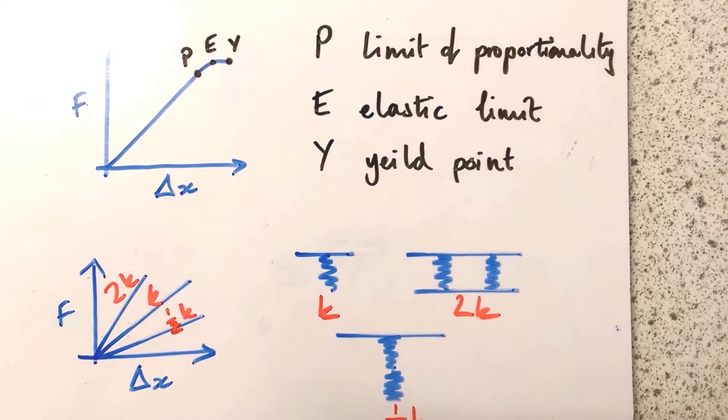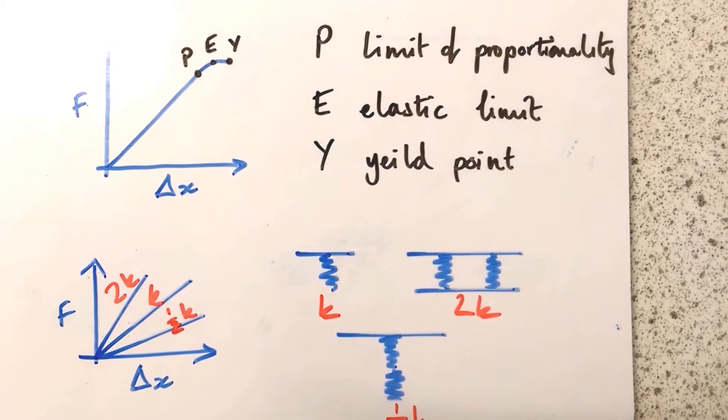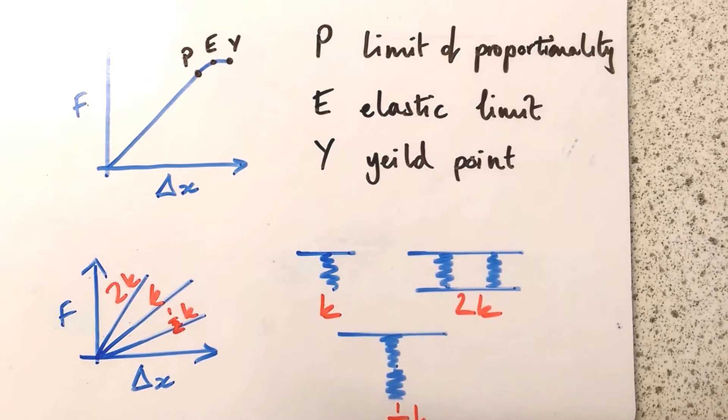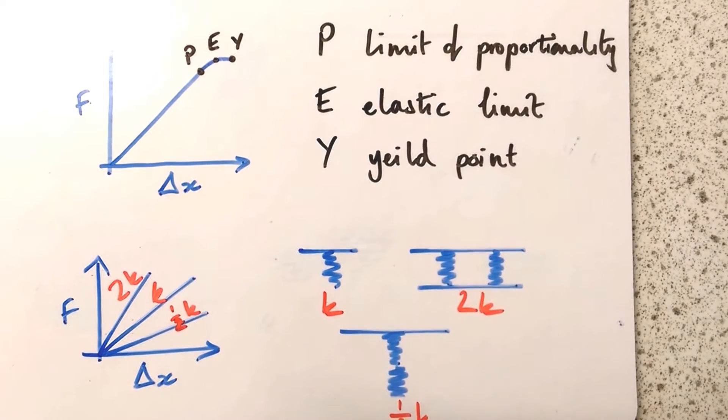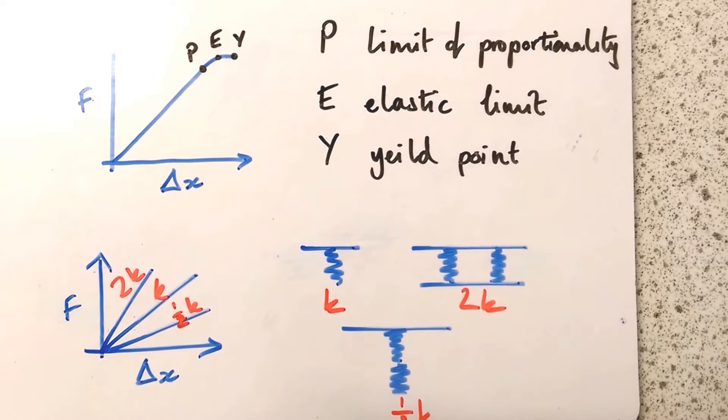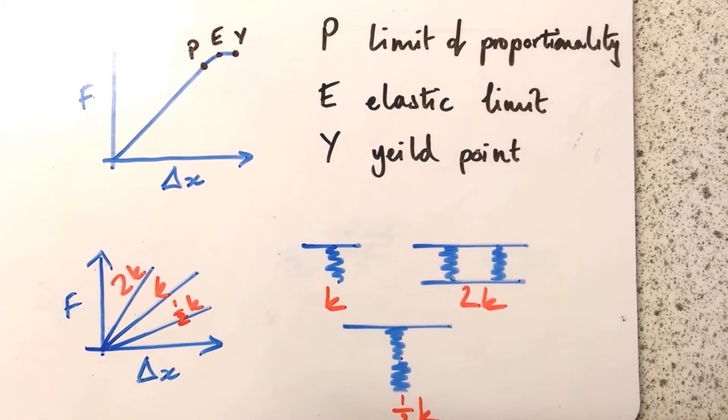And Y is the yield point. Whether it's a spring, or ball, or anything, if we're squashing or stretching the spring, that's the point at which it no longer behaves the same. It's broken - in other words, it's yielded.